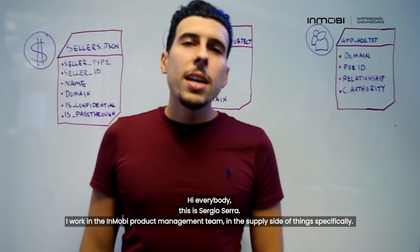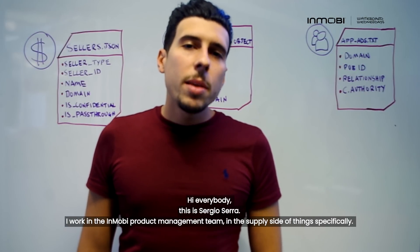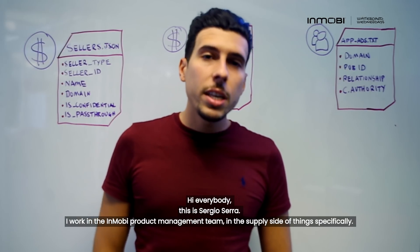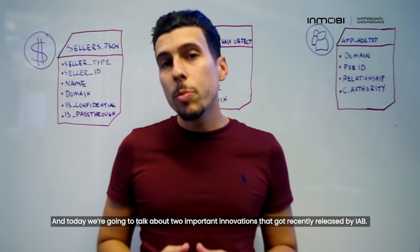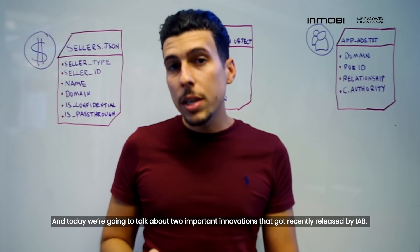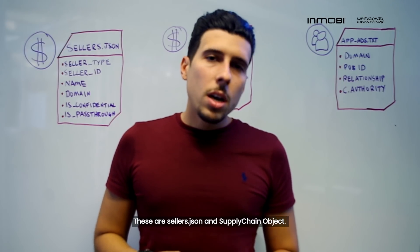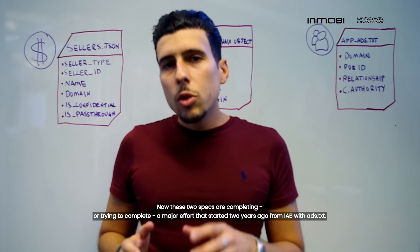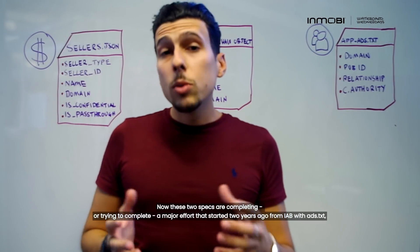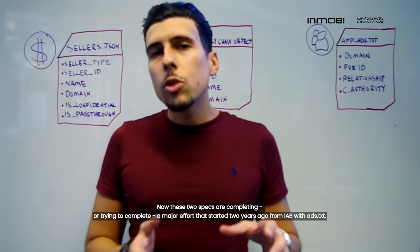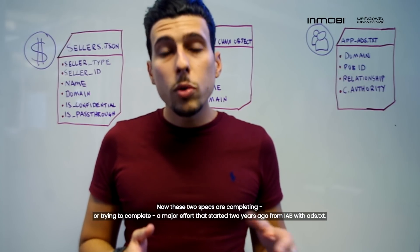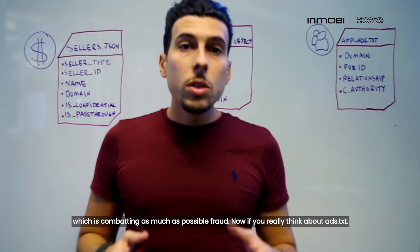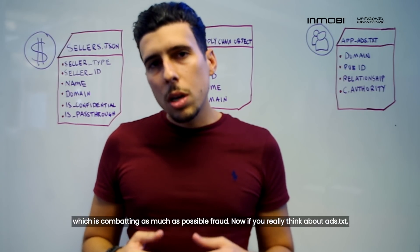Hi everybody, it is Sergio Serra. I work in the mobile product management team on the supply side specifically, and today we are going to talk about two important innovations that got recently released by IAB. These are sellers.json and supply chain object. These two specs are completing — or trying to complete — a major effort that started two years ago from IAB with ads.txt, which is combating as much as possible fraud.